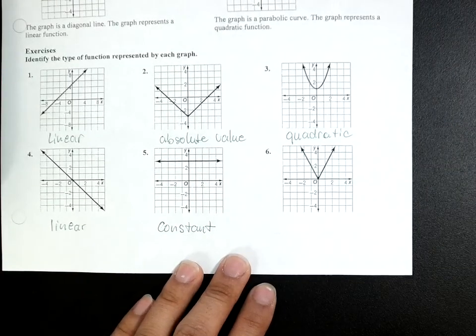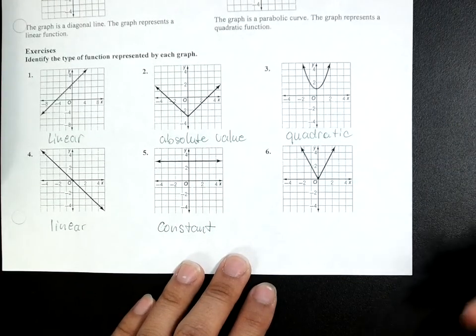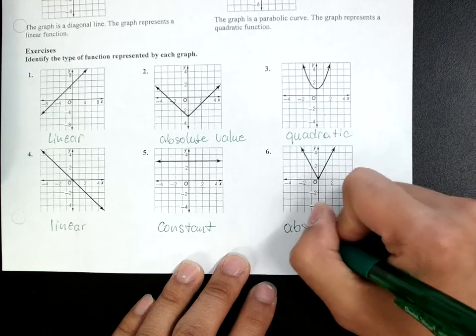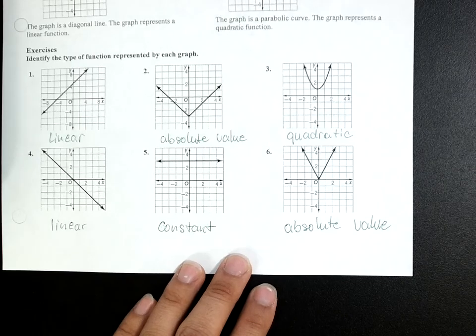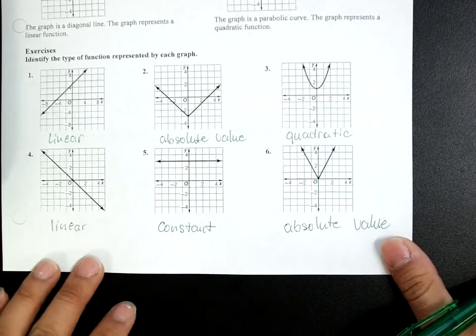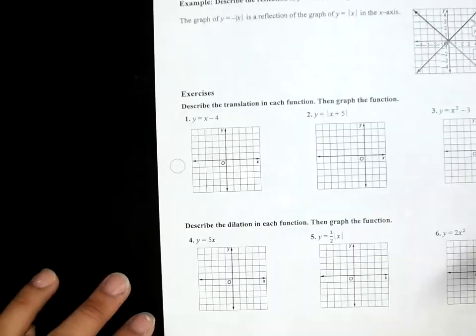And, again, we have a V shape. If it's a V shape, I know that's absolute value. Okay, let's flip to the back.